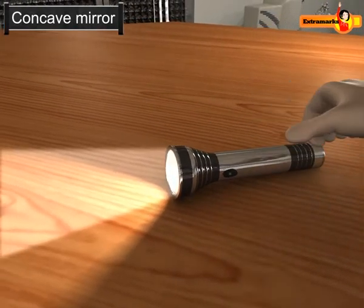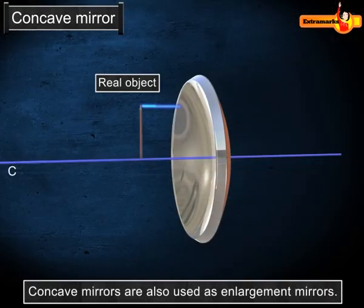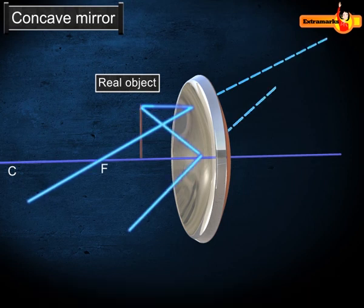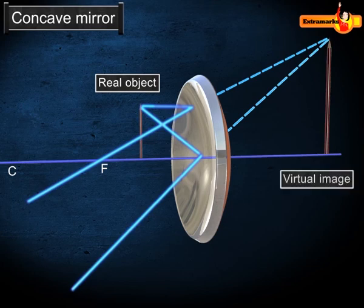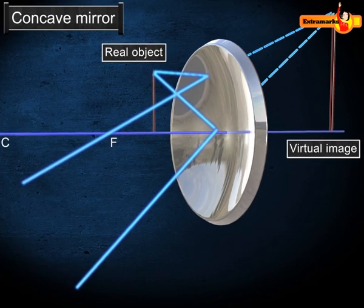Concave mirrors are also used as enlargement mirrors. When the object is placed at a position less than the focal length of a concave mirror, a larger, upright, and virtual image is formed behind the mirror.